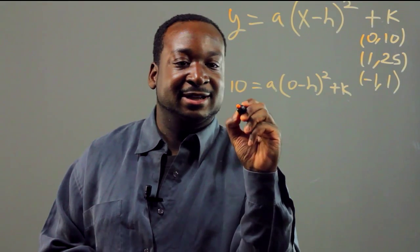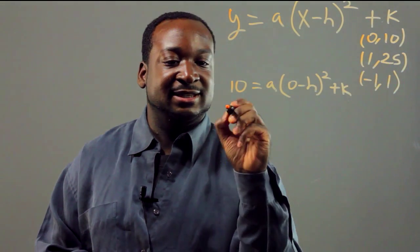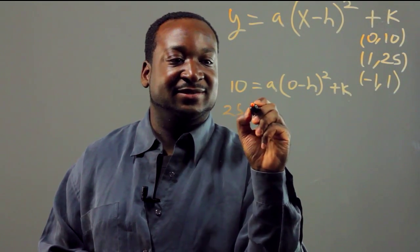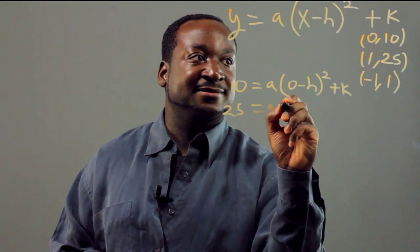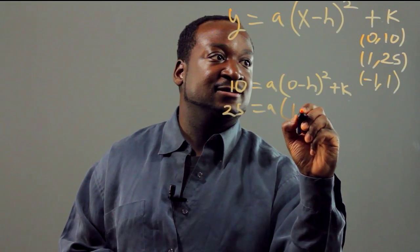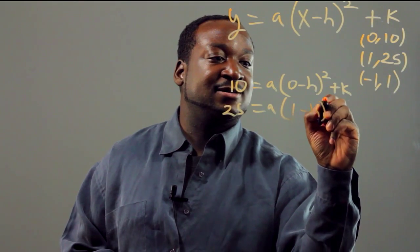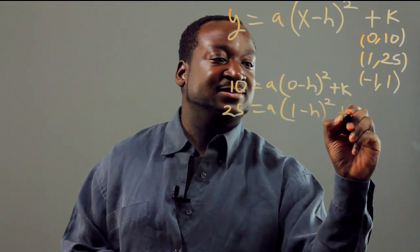In the other equation, if we substitute this in, we get 25 equals a times (1 minus h) quantity squared plus k.